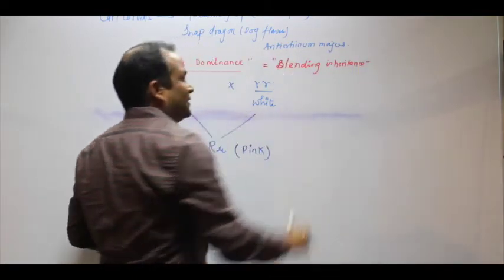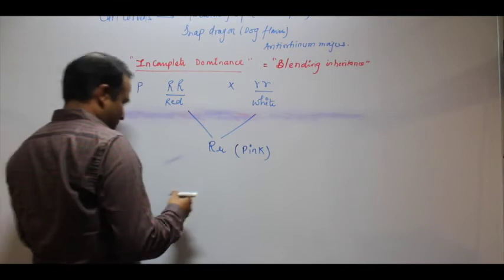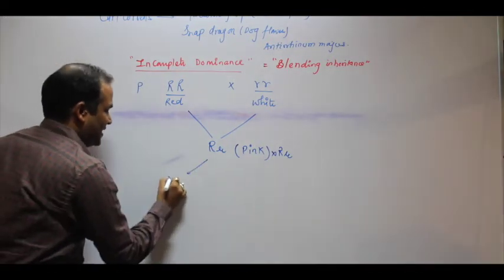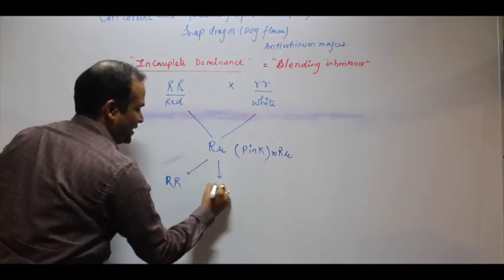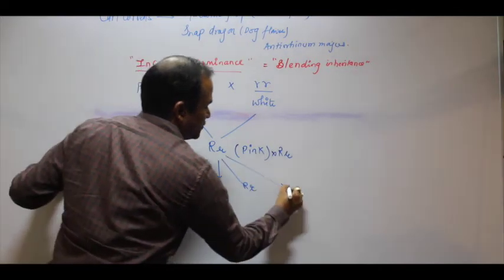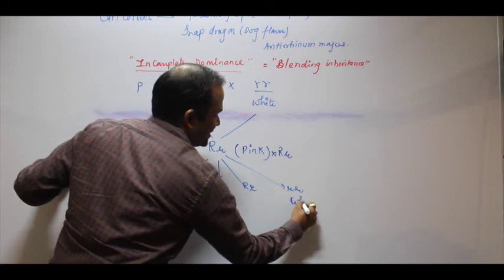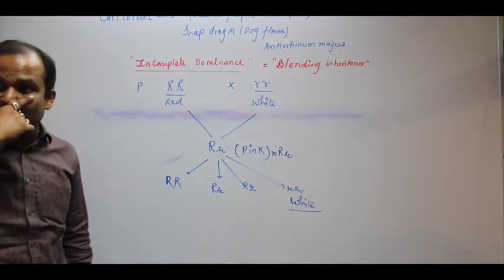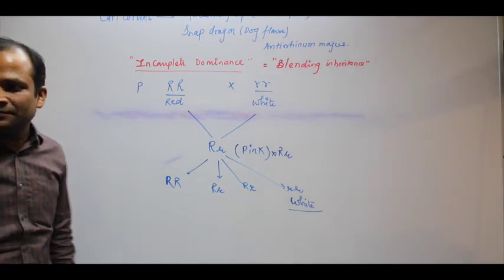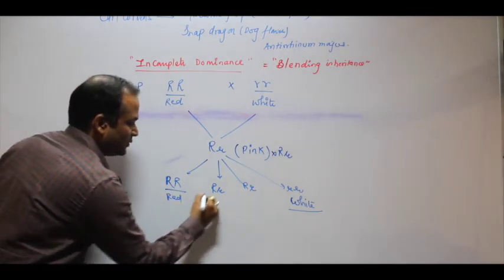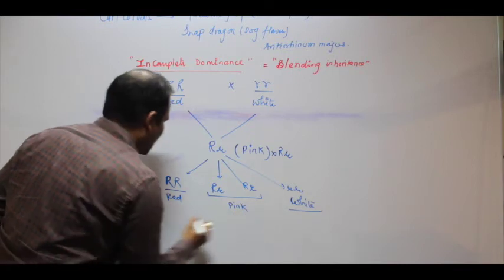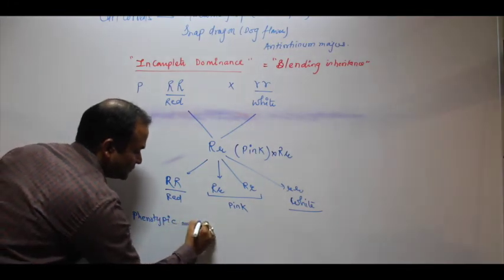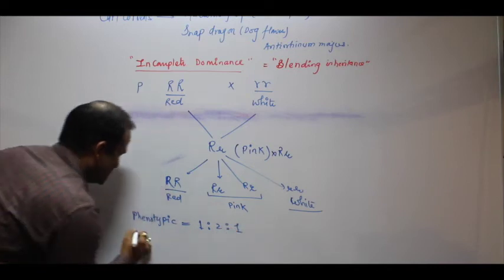As I told you, when you do selfing again, recessive can only show itself when it is in homozygous condition. This became red and these both became pink. Tell me, what is phenotypic ratio? 1 is to 2 is to 1. Now what is genotypic ratio?